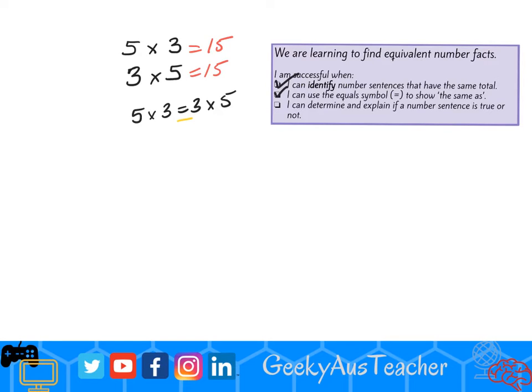I might have some number facts such as 3 times 4. If I use my multiplication knowledge, I know that 3 times 4 is 12, and I know that 6 plus 6 is 12.